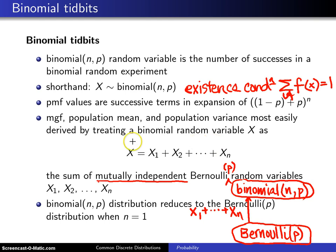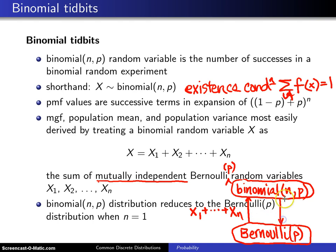You add them up, and that is the point of the fourth bullet. Now, the fifth bullet says that the binomial reduces to the Bernoulli — so if you want to go in the other direction and make a binomial random variable into a Bernoulli, you just let N equal 1, and it collapses down to the Bernoulli.